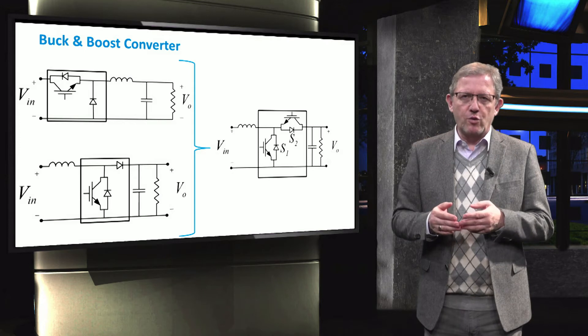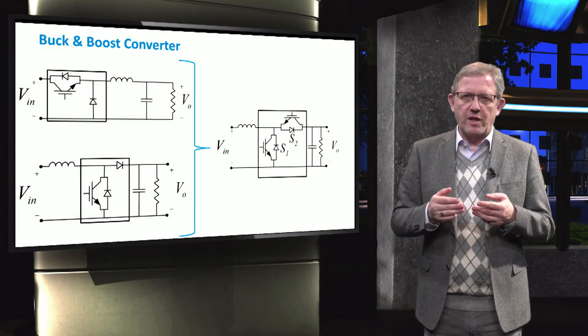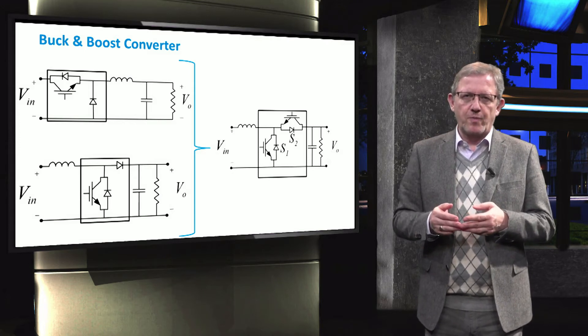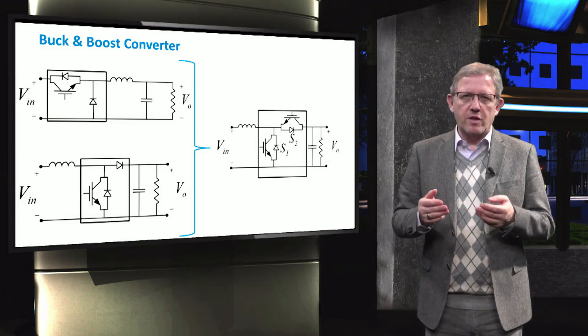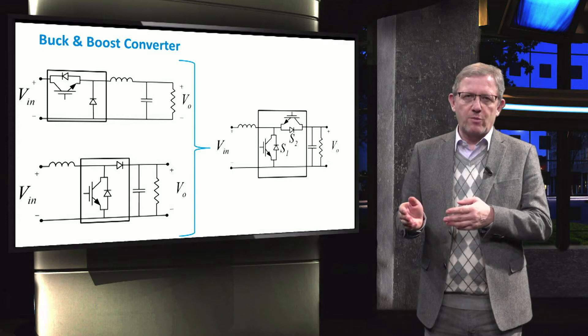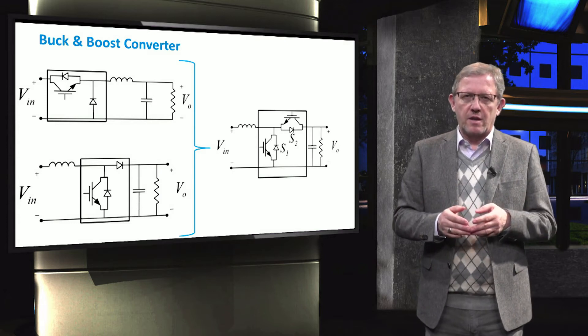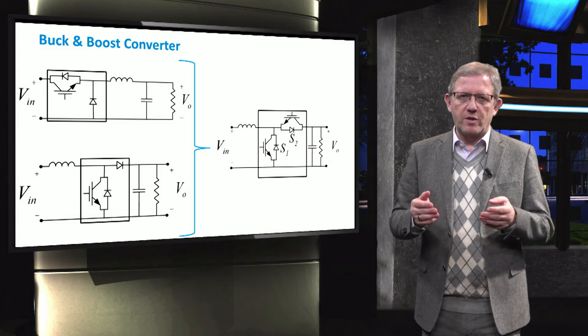This topology consists of two switches which are equipped with the two anti-parallel diodes. This combination is not so straightforward, the new converter is boost from the left to the right and buck from the right to the left. Let us have a look at this converter in more details.